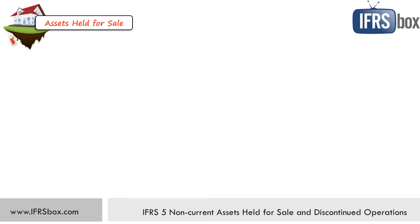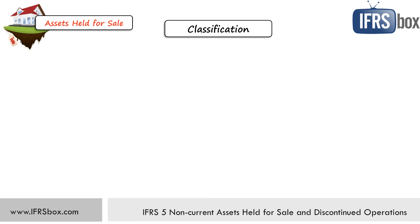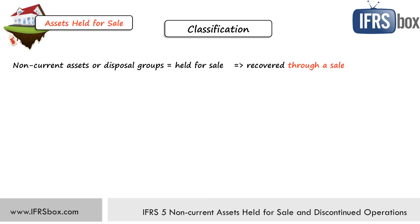Let's talk about assets held for sale first and explain some classification rules — when you should classify your asset or a disposal group as held for sale. Non-current assets or disposal groups shall be classified as held for sale when their carrying amount will be recovered through a sale rather than through continuing use. If you plan to sell a non-current asset, then you should classify it as held for sale. The only exception is when you sell non-current assets in your primary business — for example, when you are a car dealer. In that case, cars are inventories under IAS 2 and not assets held for sale under IFRS 5.